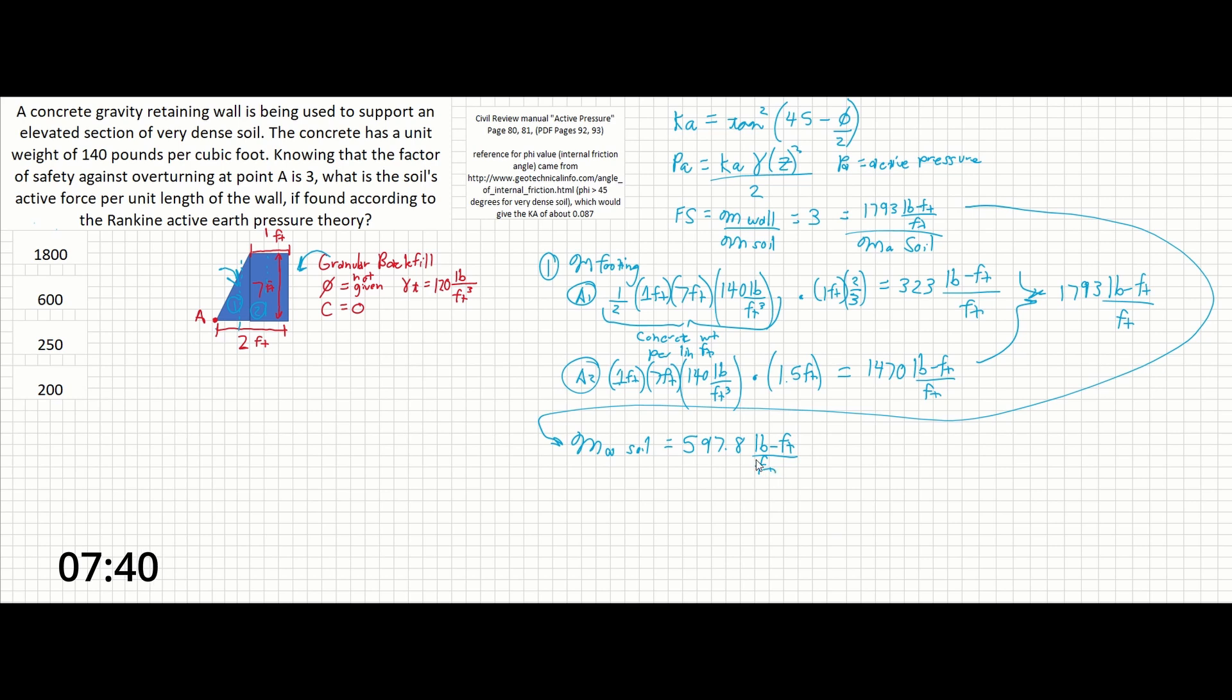Now we need to keep in mind that that's the rotational force, and we were asked for the active earth pressure, which is the PA. So PA in this case is going to be 597.8 pound foot per linear foot divided by, and we need to use the height of the wall, in this case, as our distance.